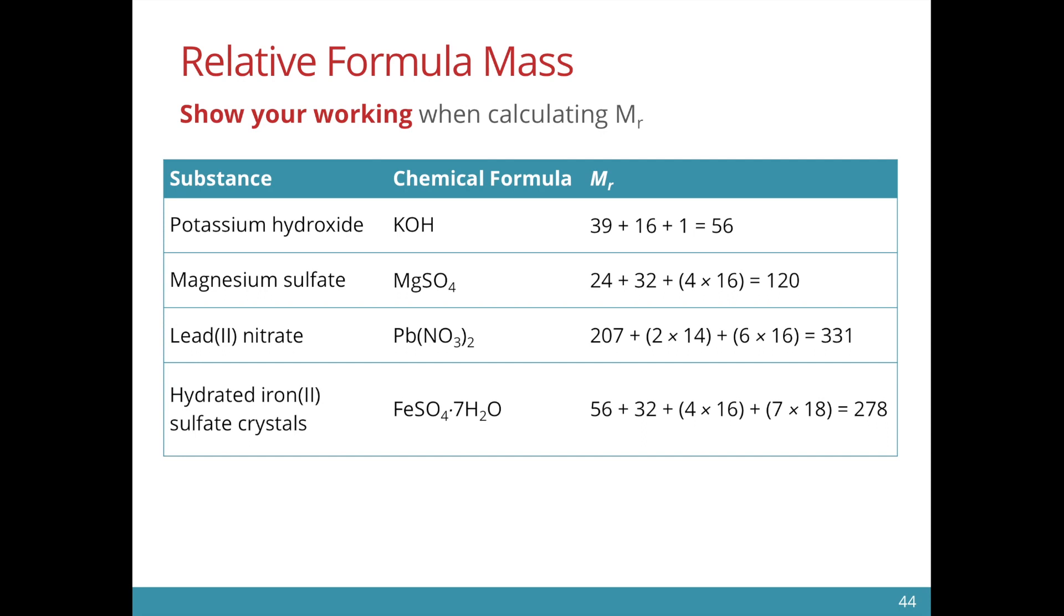Let me show you some examples. We have potassium hydroxide that is 39 for potassium, 16 for oxygen and 1 for hydrogen. We add them up, 56. MgSO4: 24 for Mg, 32 for S, for oxygen 4 times 16, 120.